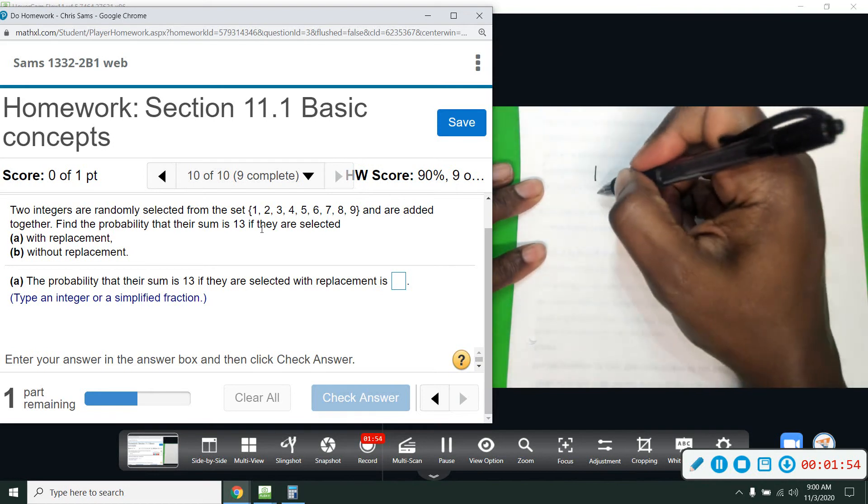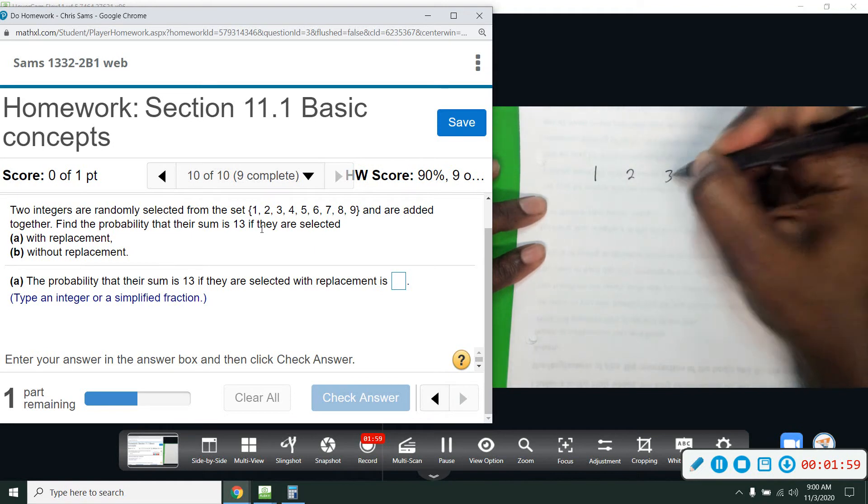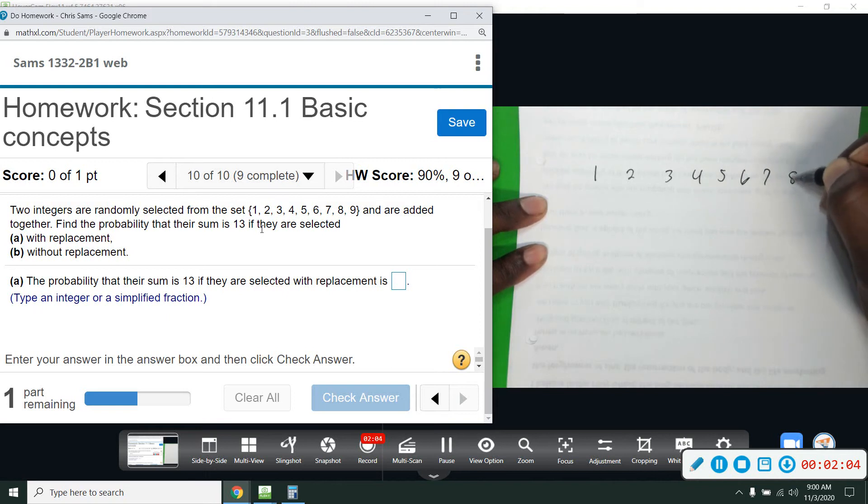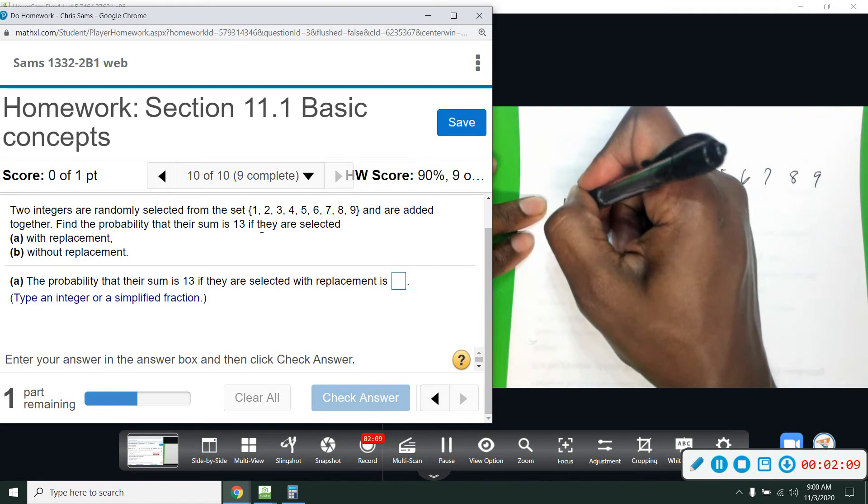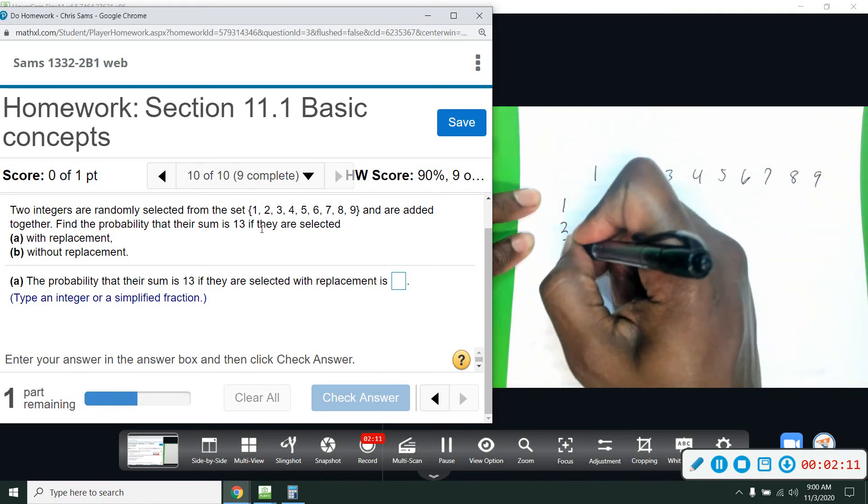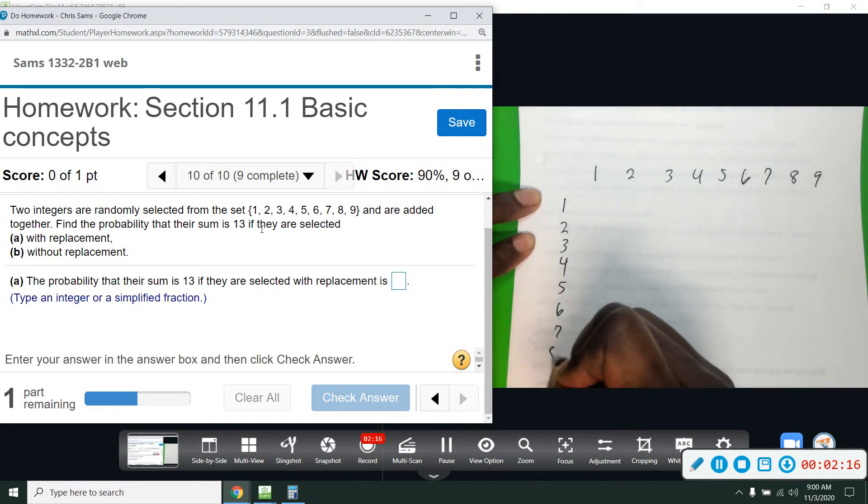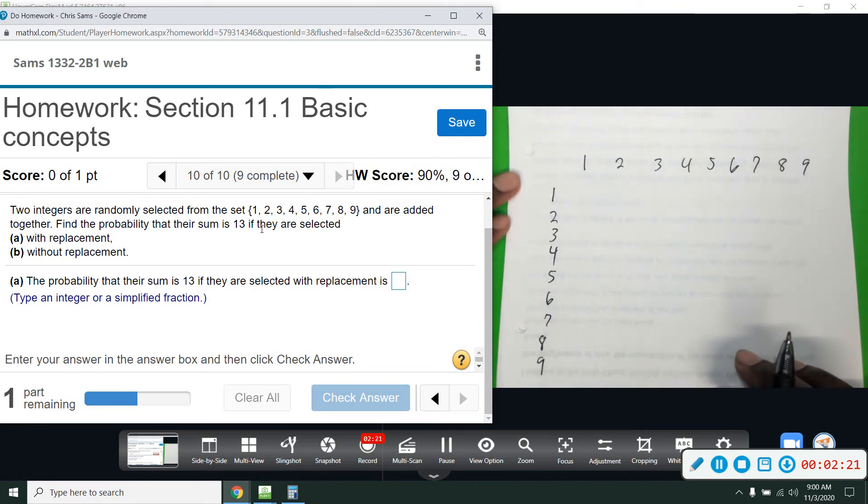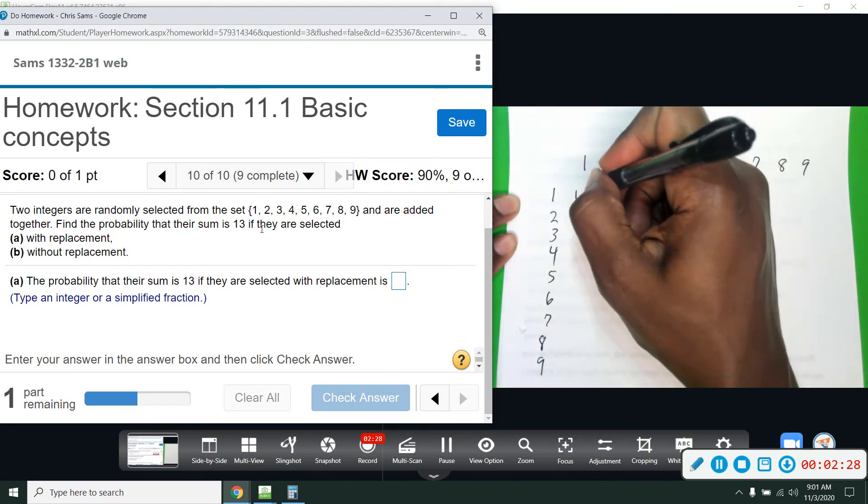We're going to have one, two, three, four, five, six, seven, eight, nine. And I'm also going to do a column, one, two, three, four, five, six, seven, eight, nine. All right. So we would be filling in two integers. So with replacement would be one, one here.